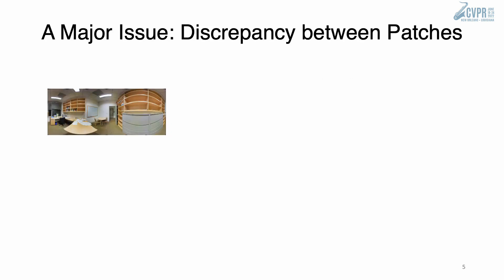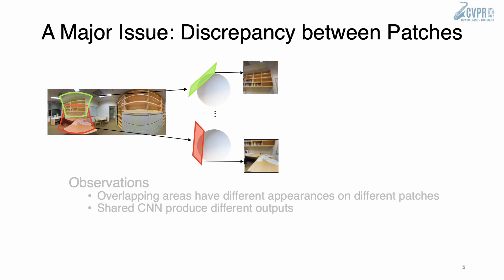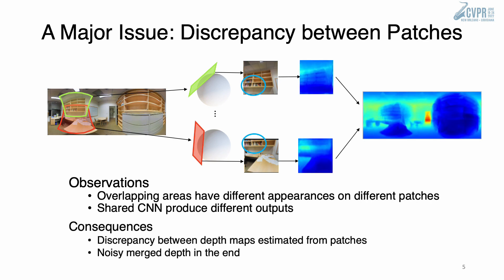Here is a visualization of the discrepancy issue. As the bookshelf is viewed from two different angles, its appearance varies on each patch. The appearance discrepancy will result in a noisy merged depth map.